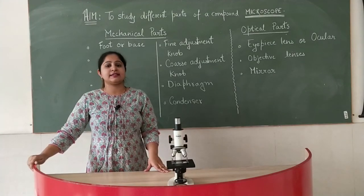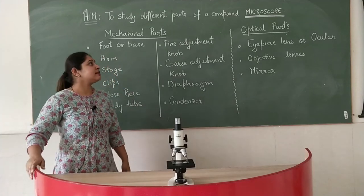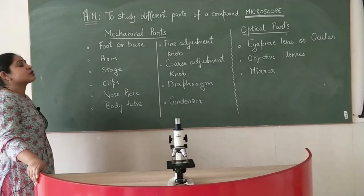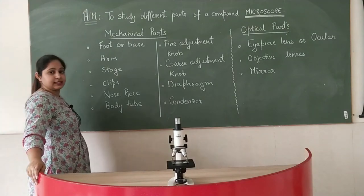Now let's study about the different parts of it. Here you can see that the different parts of a compound microscope can be broadly classified into two categories.